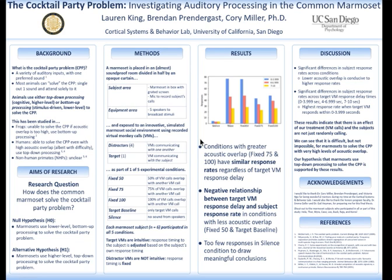Humans, on the other hand, use top-down processing, which uses higher-level cognitive processes. Unlike frogs, humans are still able to solve the cocktail party problem even with a high level of acoustic overlap.